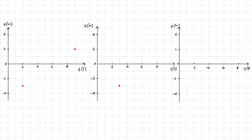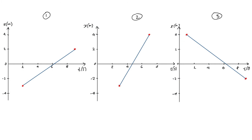Last time we played with the moving man to draw some position time graphs. Let's briefly recap a couple of key takeaways. We have three position time graphs. The first slopes upward, corresponding to motion to the right. The second slopes upward more steeply, so we'd expect motion to the right with a higher velocity. The third slopes downward with about the same steepness as the first, so we'd expect a similar magnitude but negative velocity.